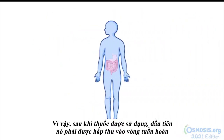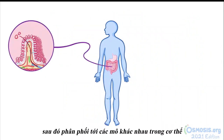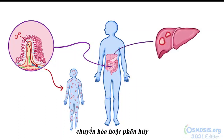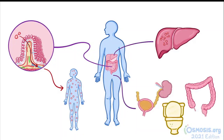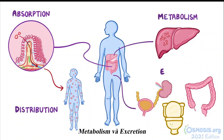Once the medication is administered, it first has to be absorbed into the circulation, then distributed to various tissues throughout the body, metabolized or broken down, and finally eliminated or excreted in the urine or feces. You can remember this as ADME: absorption, distribution, metabolism, and excretion.